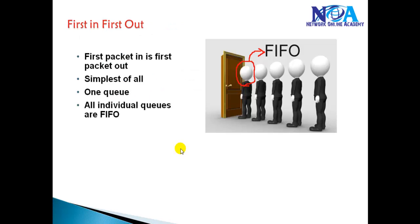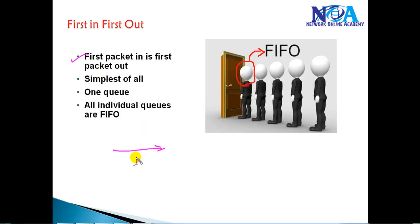The first one we'll start with is First In First Out. First In First Out is the default queuing mechanism used normally, even for input queues the default is First In First Out. The first packet whichever comes first will be processed. It's the simplest of all — it has just one queue, and packets are always processed in first in first out order.